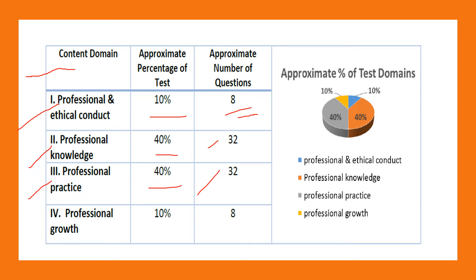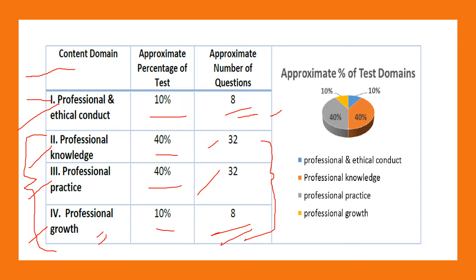My expert advice is to skip standard one initially and start your preparation from standards two and three, then prepare standard four because it's interesting and easy to memorize, then come back to standard one. Standard one — professional and ethical conduct — requires a lot of memorization, whereas standards two and three need thorough understanding of concepts. They carry 40% of the weightage each with 32 questions each.